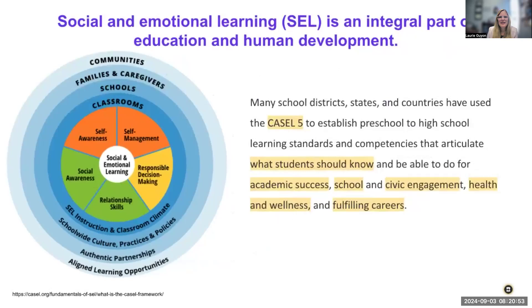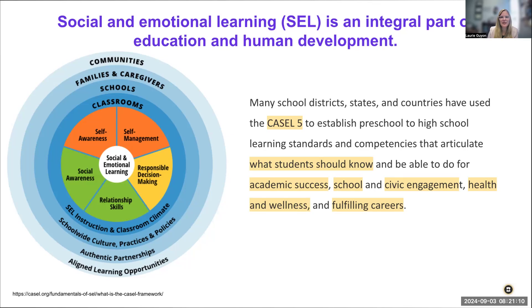I want to start by talking about social-emotional learning and the CASEL framework. The CASEL framework has five parameters that they have found allow for student success, health, and wellness. They are self-management, responsible decision-making, relationship skills, social awareness, and self-awareness.